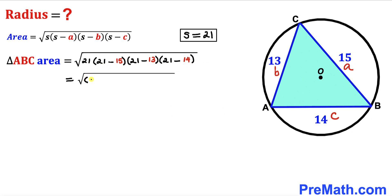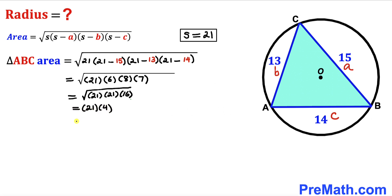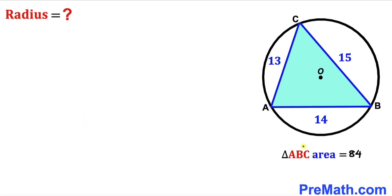So we can write this as √(21 × 6 × 8 × 7). I'll break down 6 as 2 × 3. Then 3 × 7 = 21 and 2 × 8 = 16, giving us √(21 × 21 × 16). The square root of 21 × 21 is 21 and the square root of 16 is 4, so we get 21 × 4 = 84. The area of triangle ABC is 84 square units.